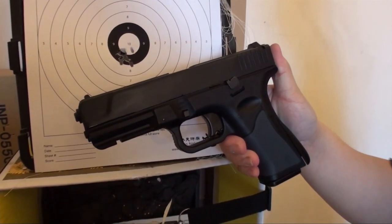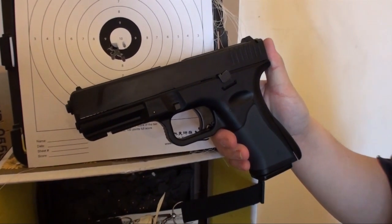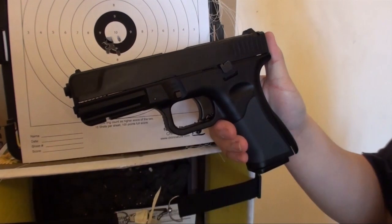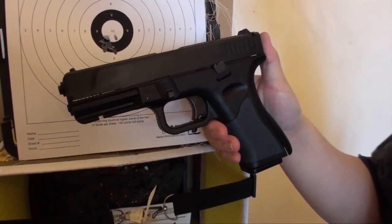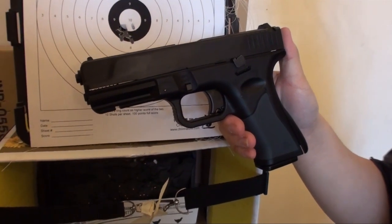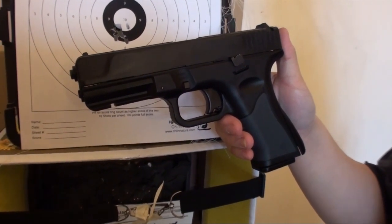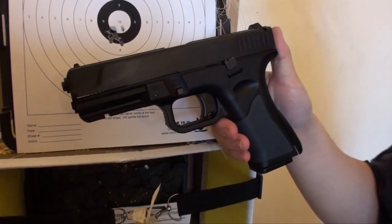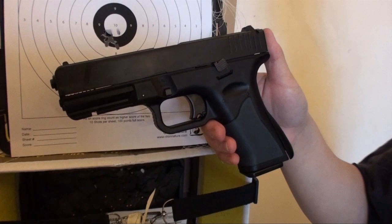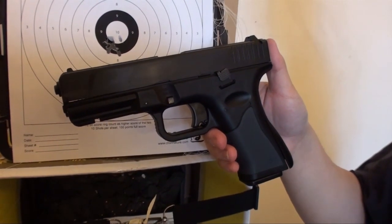This is the Crossman T4. It chronos at about 400 fps and gives you about eight mags, like 64 shots per CO2 cartridge. That's pretty good. So enjoy my video, subscribe and like, and hope you enjoy your Crossman T4 as well. Thank you, bye-bye!